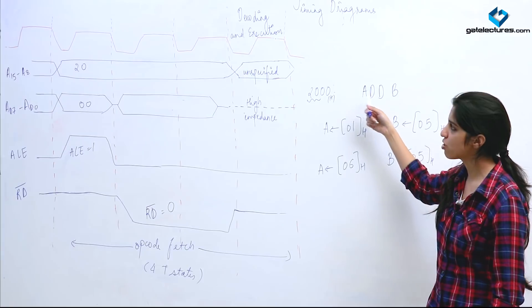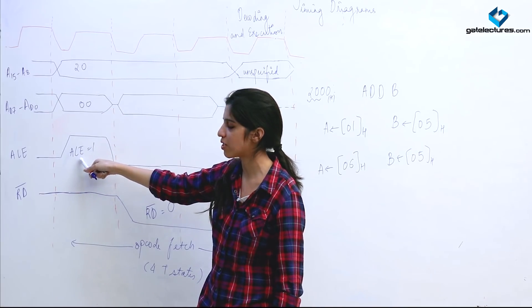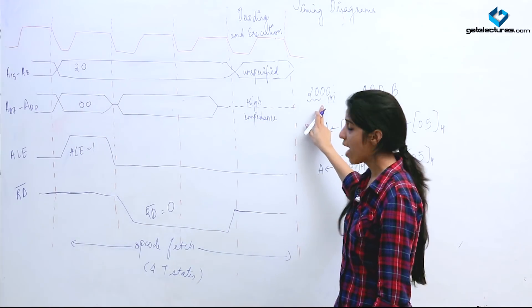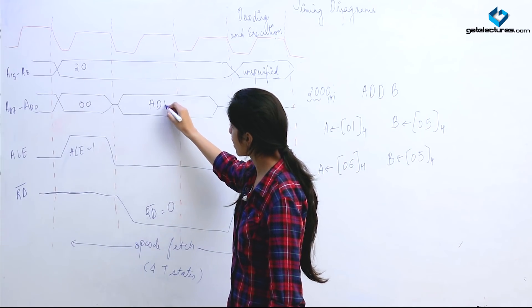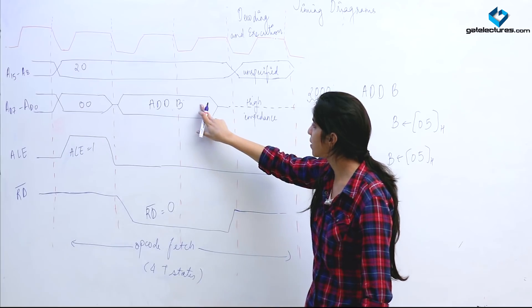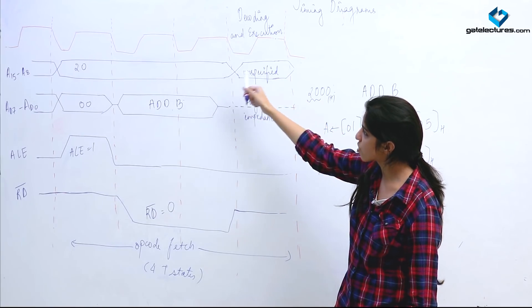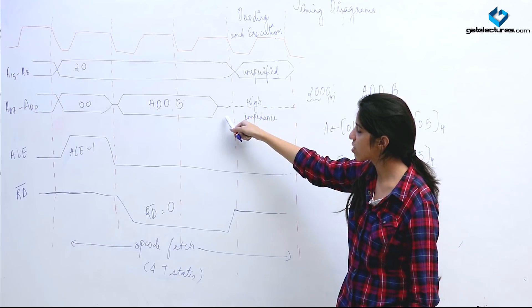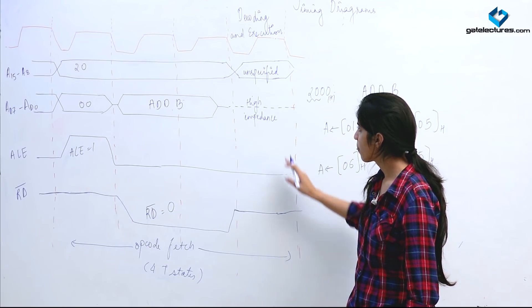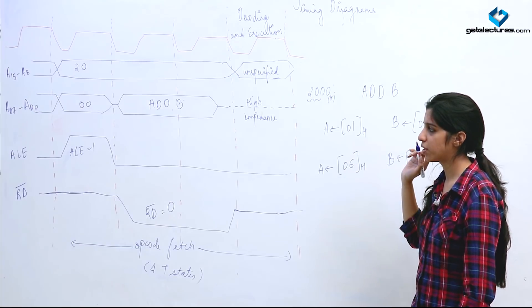The starting address for ADD B is 2000H. We put 20H and 00H in the address bus and enable ALE = 1 so the bus acts as an address bus. We reach address 2000H and fetch the instruction ADD B onto the data bus. With ALE = 0, the bus is a data bus. We read the instruction. In the same clock cycle, ADD B is decoded and executed — the values are added and the result is written into the accumulator.